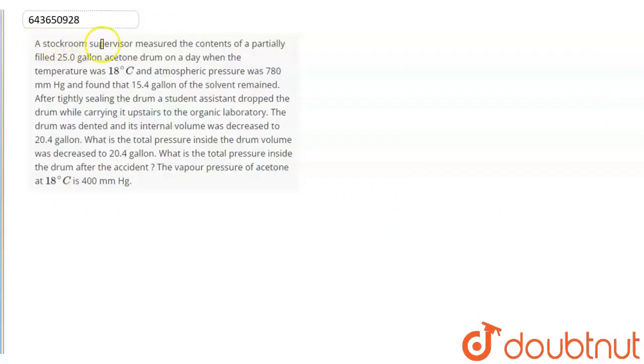A stockroom supervisor measured the contents of a partially filled 25-gallon acetone drum on a day when the temperature was 18 degrees Celsius and atmospheric pressure was 780 mmHg and found that 15.4 gallons of the solvent remained.